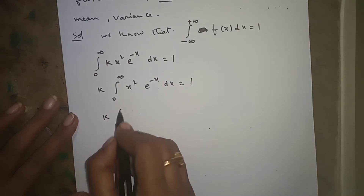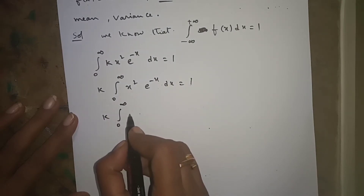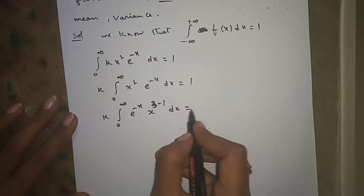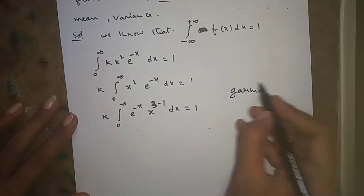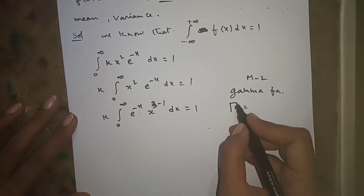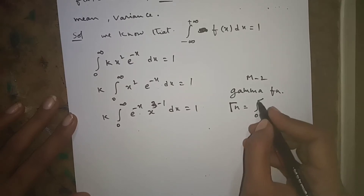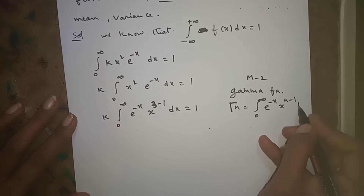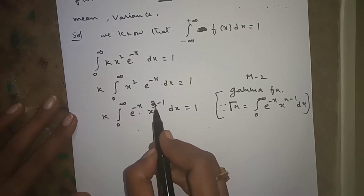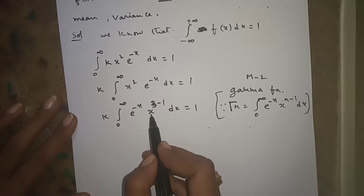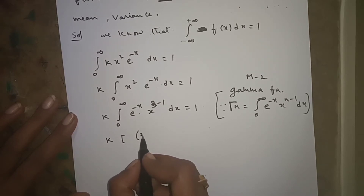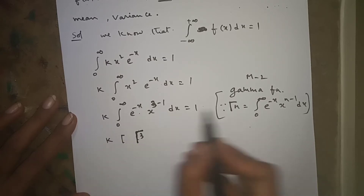Now, we apply the gamma function formula learned previously. The gamma function formula is: Γ(n) equals the integral from 0 to infinity of e^(-x)·x^(n-1)dx. Our integrand x² is x^(3-1), so it matches the form x^(n-1) with n=3. Therefore k times Γ(3) equals 1.